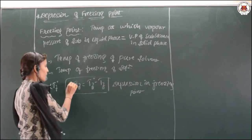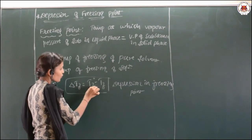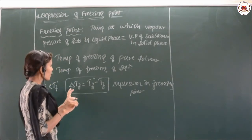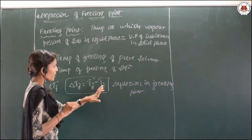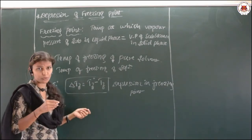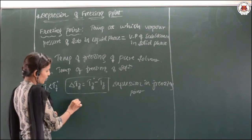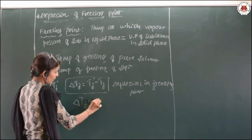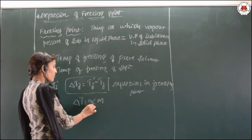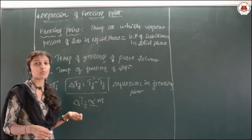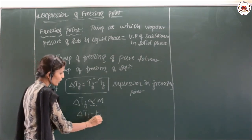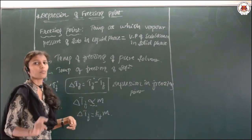The depression of freezing point, delta Tf, is given as Tf° minus Tf, because Tf° is the higher value. Generally, for a dilute solution, delta Tf is directly proportional to the molality. This directly proportionality sign is replaced by adding one more constant: delta Tf equals Kf into molality M.